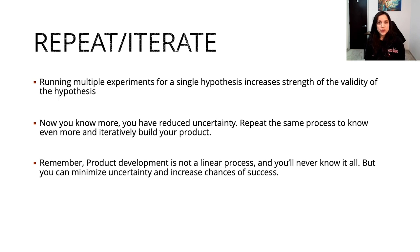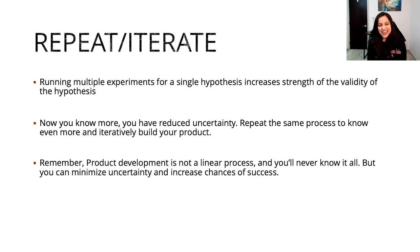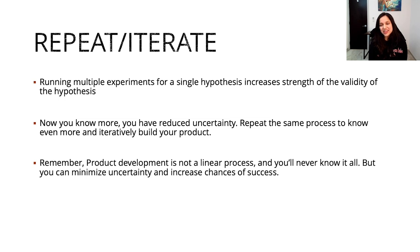Now you've gone from gathering weak evidence to strong evidence for your key hypotheses. You can run multiple experiments for the same hypothesis to gather even stronger evidence, or repeat the entire process to gather more information, add features, or remove features that no longer work. Remember that product building is not a linear process — there will never be a time when you've figured it all out. You have to keep gathering more evidence and minimizing uncertainty in an effort to build a successful product, and keep iterating.